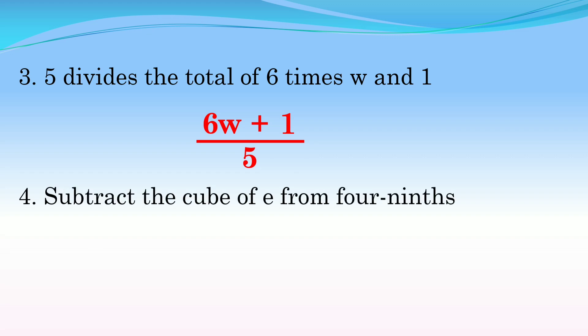Number four: Subtract the cube of e from four-ninths. We need to subtract the cube of e from four-ninths, so cube of e can't come first. Four-ninths must come first because cube of e 'from' four-ninths. Our keyword is 'subtract' which is minus, but it can't be e³ first. Because 'from', four-ninths must come first: 4/9 - e³. There are keywords where what comes first in the statement isn't always first in the expression. We need to analyze the phrase carefully. Because we have the word 'from', four-ninths comes before cube of e.